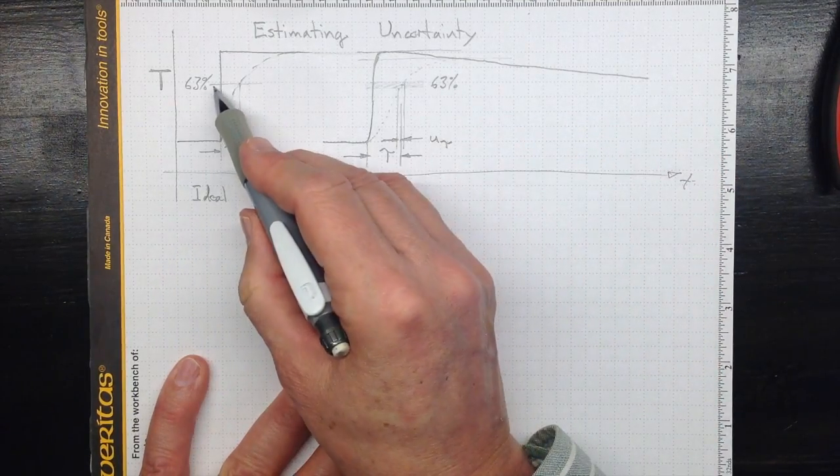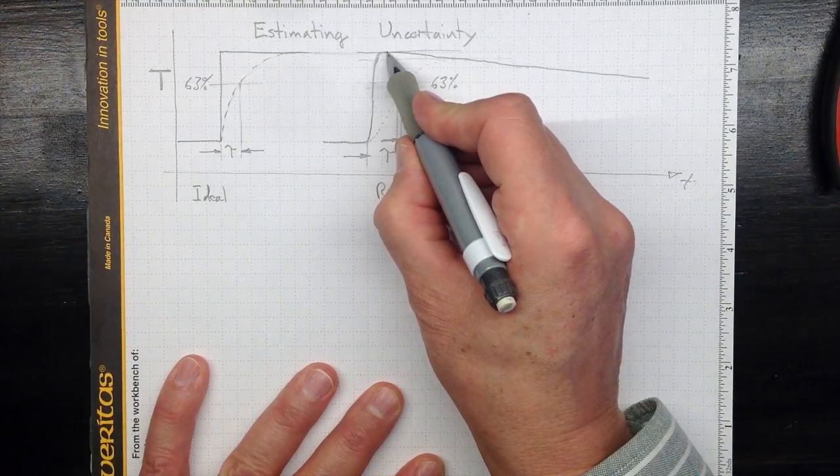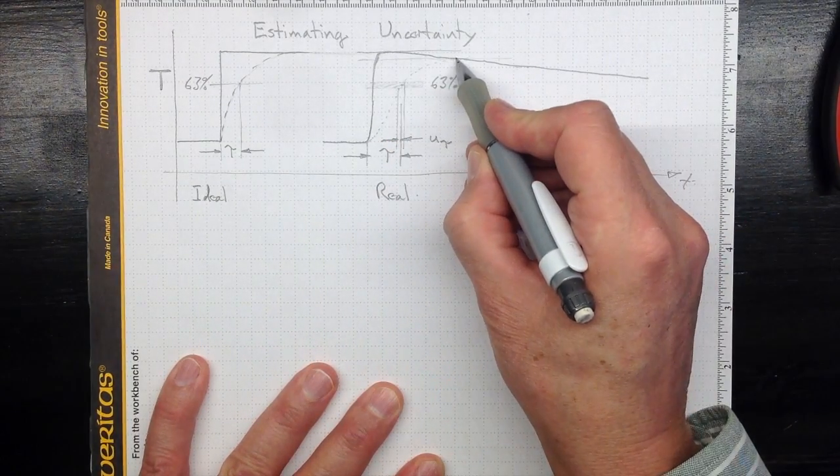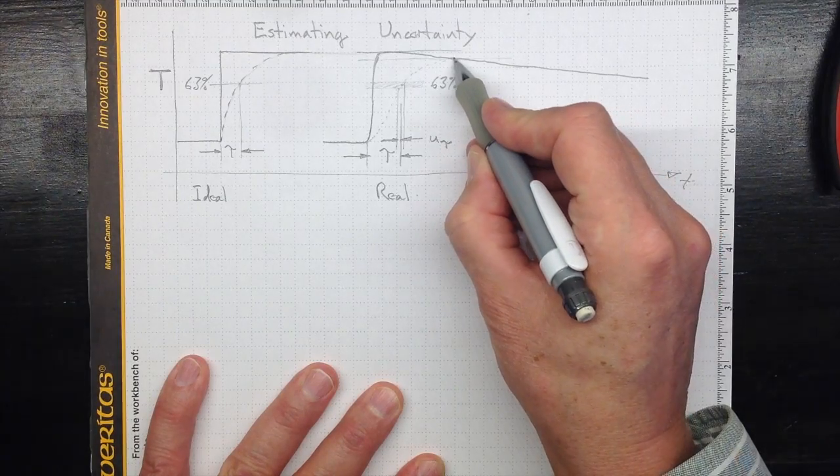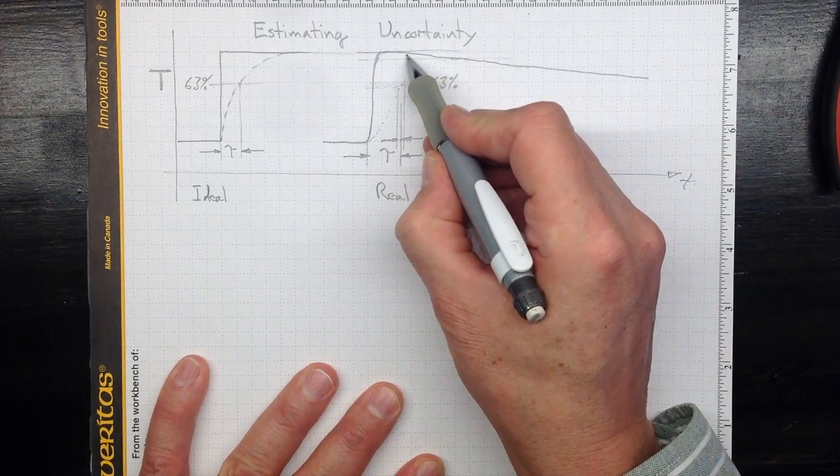So if we were looking for 63%, should we take this temperature, or this temperature where it finally zooms in, or something somewhere in between?